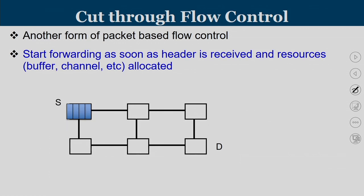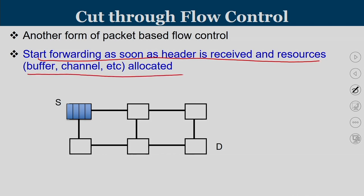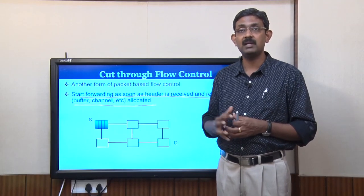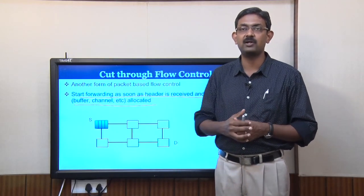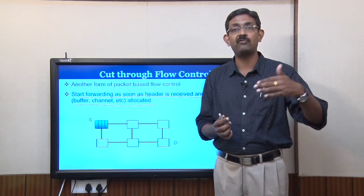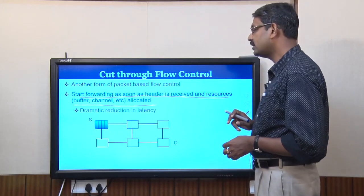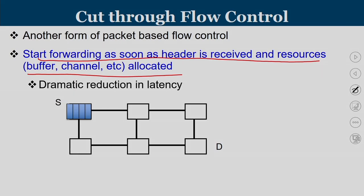Another flow control approach practiced in macro networks is virtual cut-through switching — another form of packet-based flow control. Here, we start forwarding as soon as the header is received and buffers are available. The head flit reaches the next router; we do not wait for the entire packet to arrive. Whenever the head flit can move further, it advances. This dramatically reduces latency because we are not waiting for the entire packet — the store-and-forward concept is eliminated.